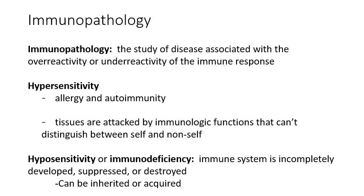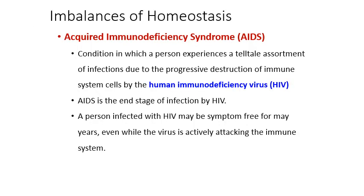Hyposensitivities are sometimes called immunodeficiencies, and those can either be inherited or acquired. The main acquired immunodeficiency is AIDS — acquired immunodeficiency syndrome — which is a result of long-standing HIV infection. After HIV has run its course for a long time, T cell counts get very low. Without enough T cells, you don't have those generals in charge of your immune armed forces, so you're not able to fight off general infections that a healthy immune system would handle easily.